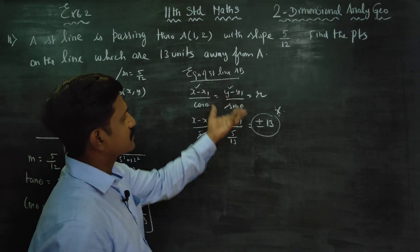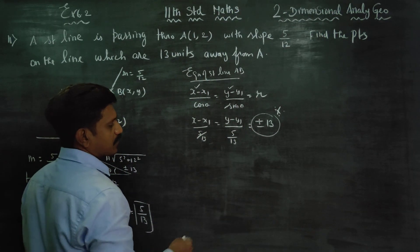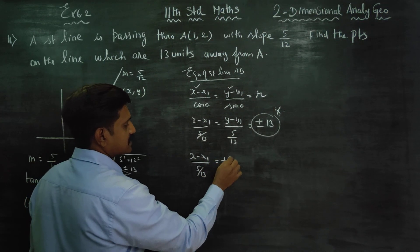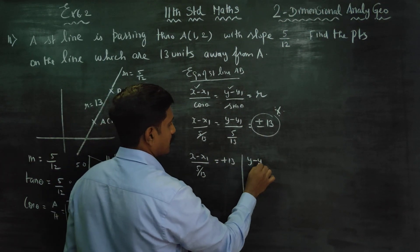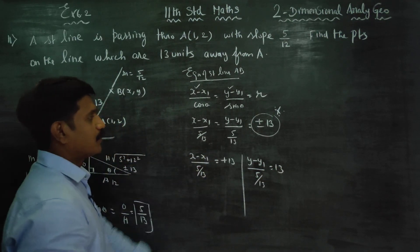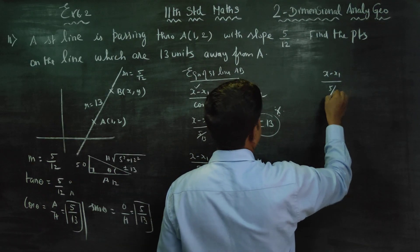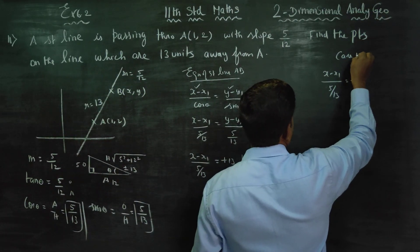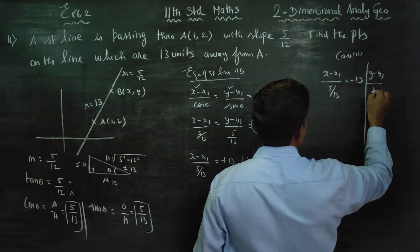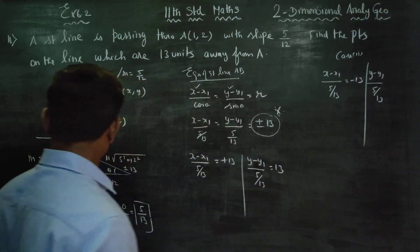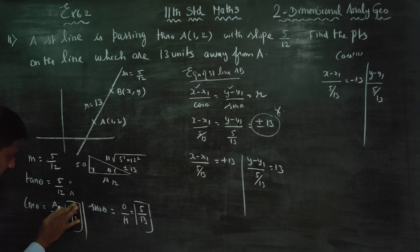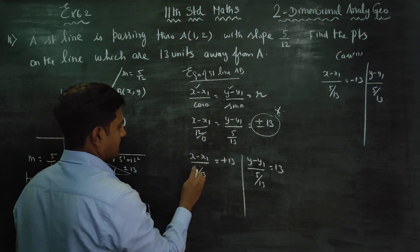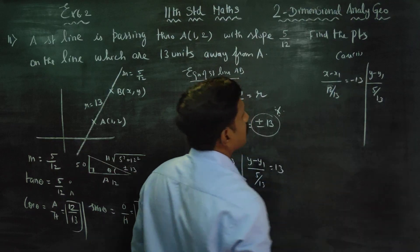This is called the parametric form of the equation of a straight line AB. After finding this, we consider two cases: Case 1 is x minus x1 by 12/13 equal to plus 13, and Case 2 is x minus x1 by 12/13 equal to minus 13.